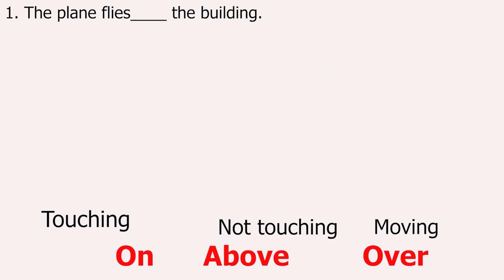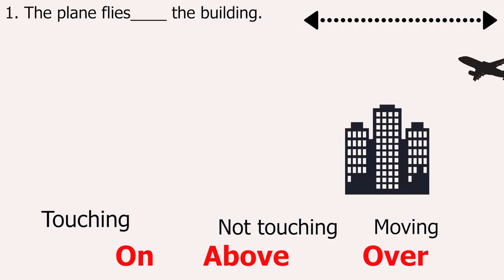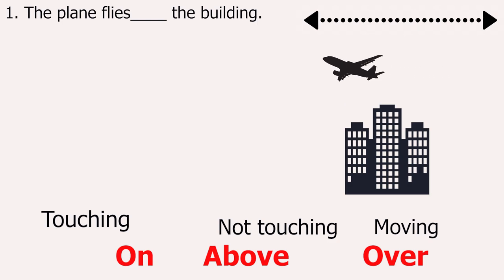The plane flies ___ the building. The plane is moving, so we use 'over'. The plane flies over the building.